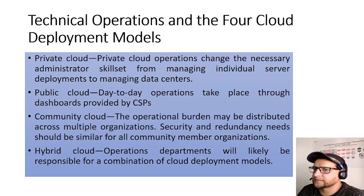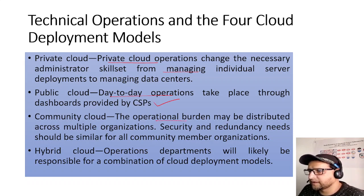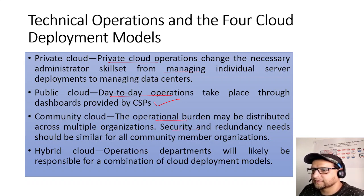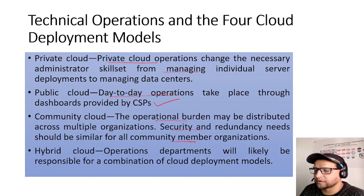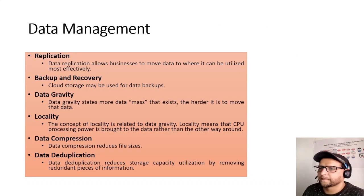Technical operations for deployment models: Private cloud changes the necessary admin skill set from managing individual servers to managing a data center. Public cloud — day-to-day operations take place through dashboards provided by the CSP. Community cloud — the operational burden may be distributed across multiple organizations; security and redundancy needs should be similar for all community members. Hybrid cloud — operations departments are likely responsible for a combination of cloud deployment models.